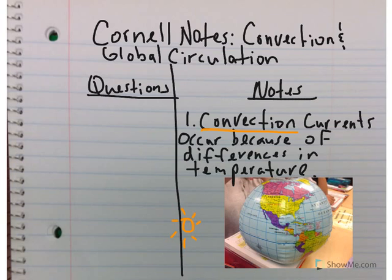Let's apply this idea of convection to the oceans and the whole planet. The Sun hits the middle, or equator, more directly, so it makes the water there warmer. The warm water starts moving in all directions, but mostly starts moving upwards.